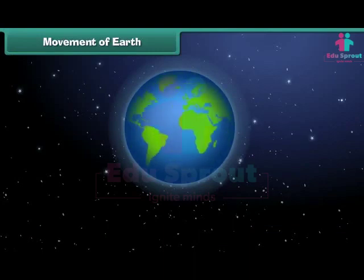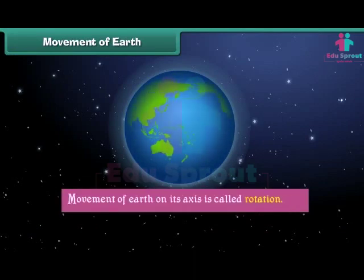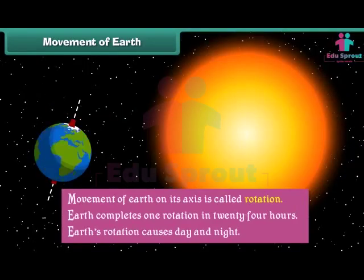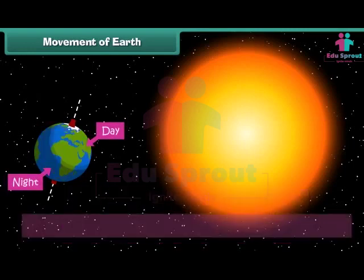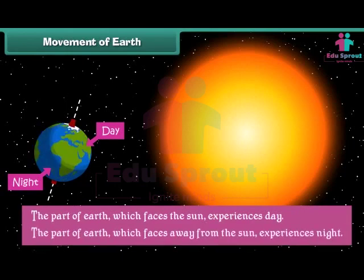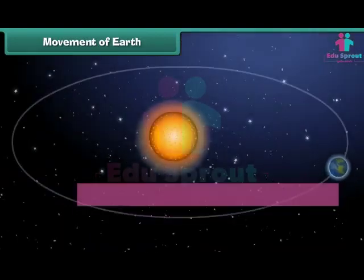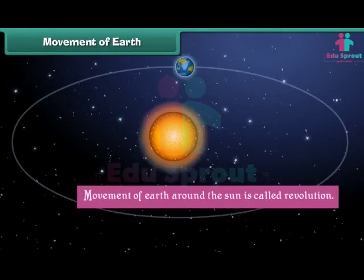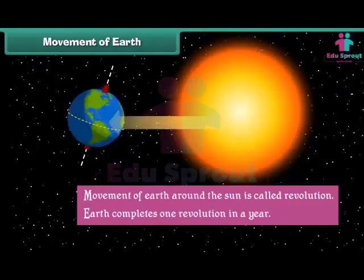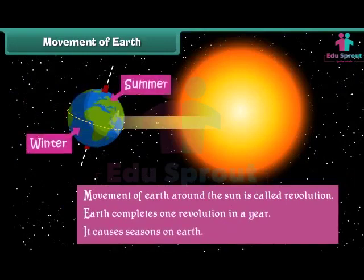Earth shows two types of movement. Movement of earth on its axis is called rotation. Earth completes one rotation in 24 hours, and earth's rotation causes day and night. The part of earth which faces the sun experiences day, while the part facing away from the sun experiences night. Movement of earth around the sun is called revolution. Earth completes one revolution in a year, and it causes seasons on earth.